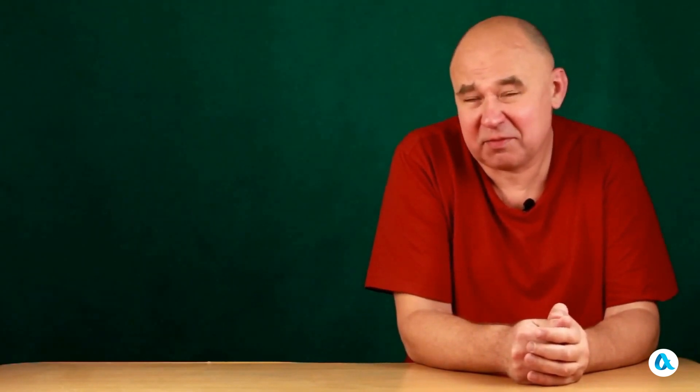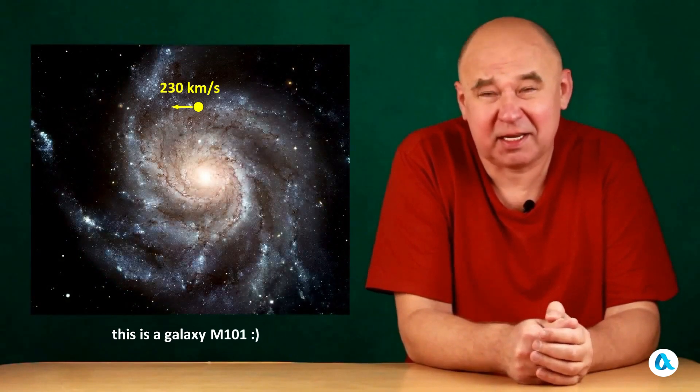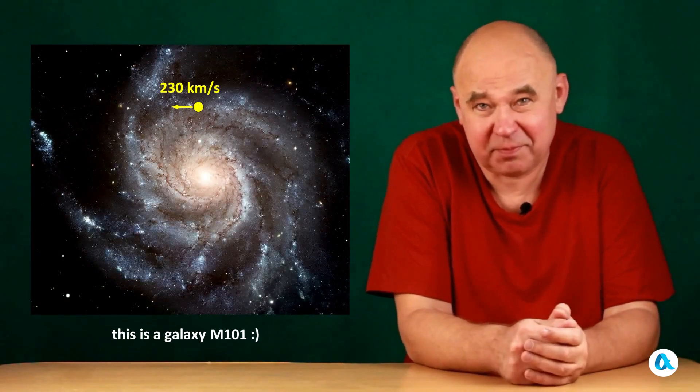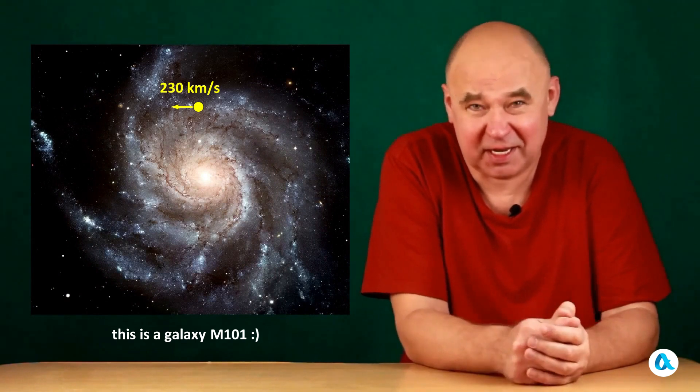But the Sun itself is also moving around the center of the galaxy at a speed of 230 kilometers per second. So why am I not mentioning this kind of aberration?